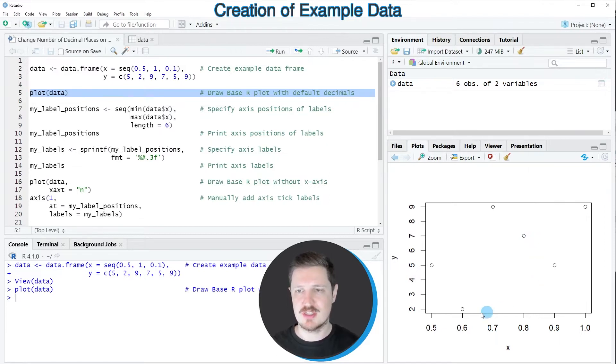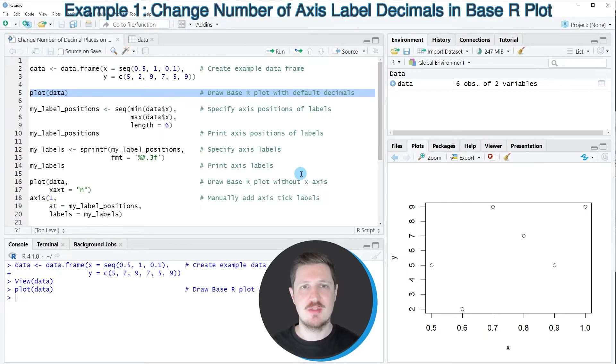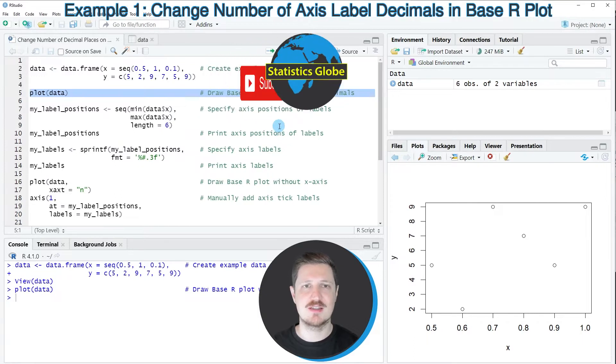And you can also see that the decimal places are set by the default specifications of the plot function. So in this case, we have one decimal place. Now, let's assume that we want to change this, then we have to specify the decimal places manually.